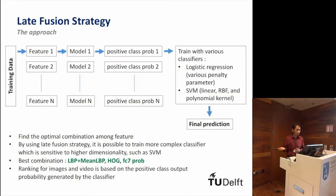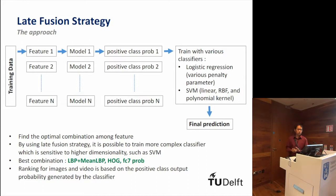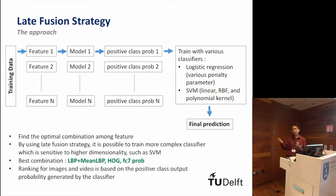After getting the best model from each individual feature, we tried several combinations by adding features one by one incrementally, and we ended up with the set of features that performs best on our development set. The idea is to train individual models based on individual features, and then from the positive class output probabilities, train another classifier. This late fusion strategy reduces the dimensionality — for instance, if we use three individual features, we end up with only three feature values — allowing us to apply classifiers such as SVM and logistic regression.